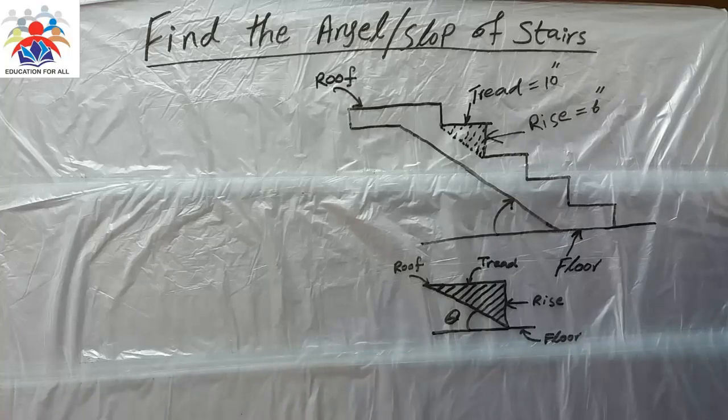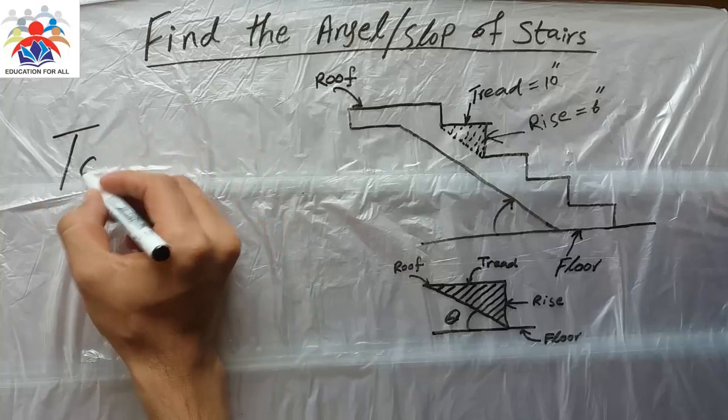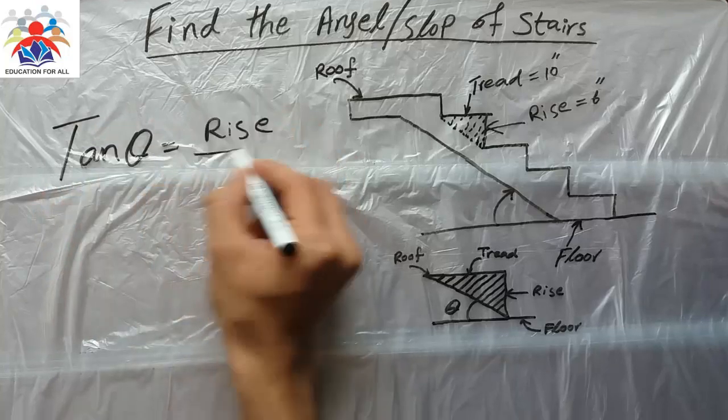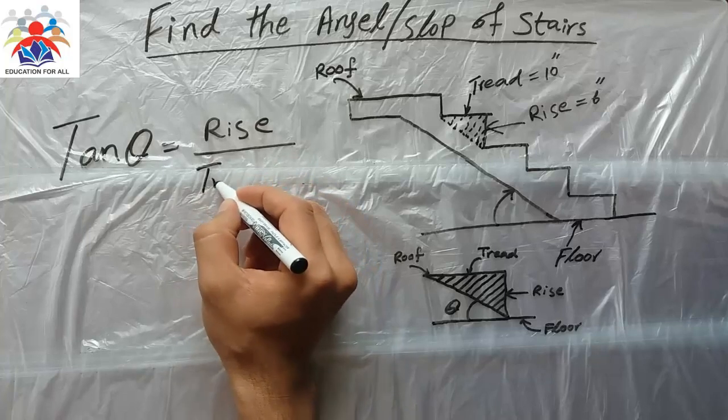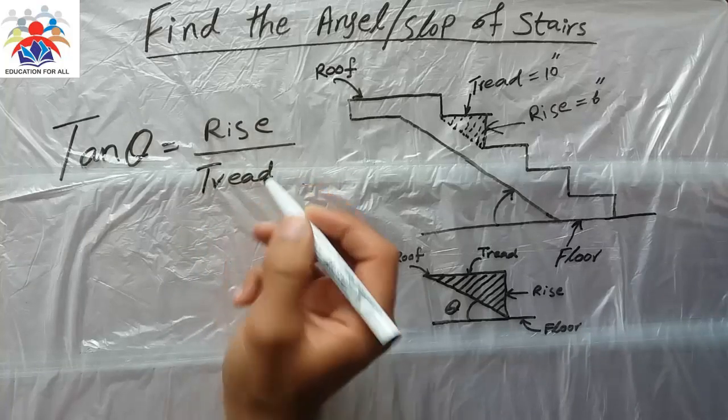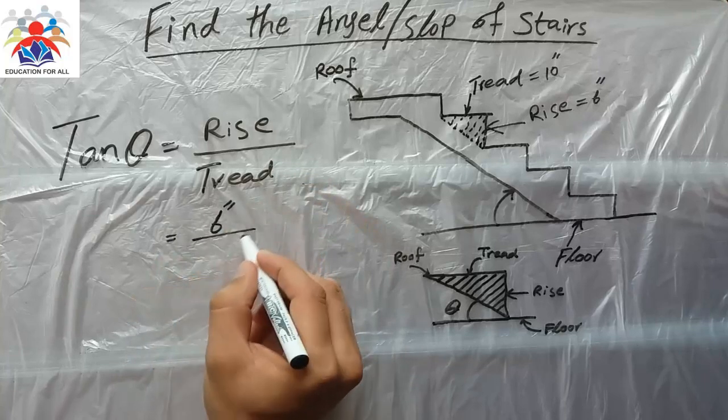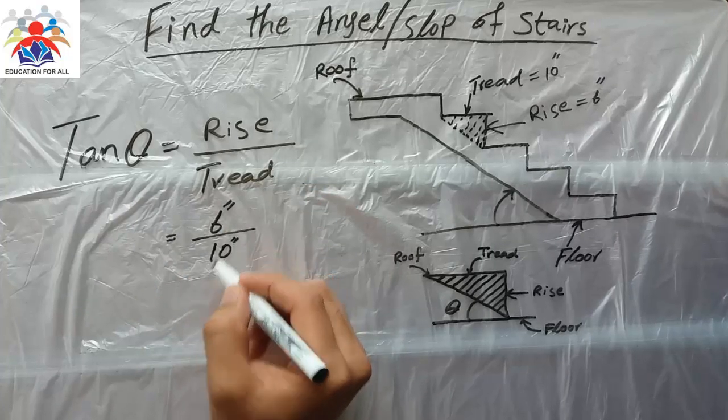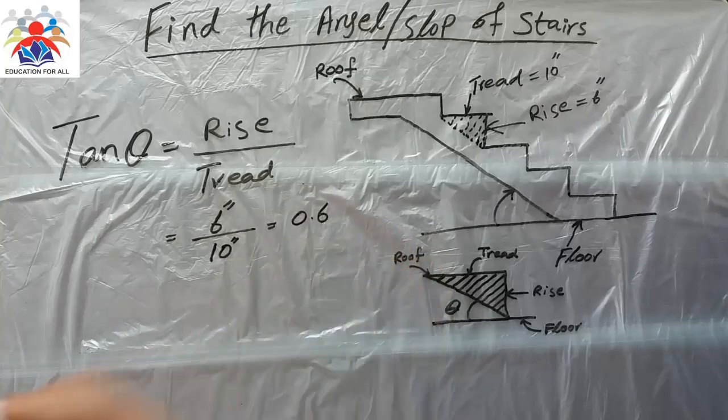In order to calculate the slope of the stairs from floor, we normally use tan theta. Tan theta is equal to rise over tread. Rise we have 6 inches and tread we have 10 inches, equal to 0.6.